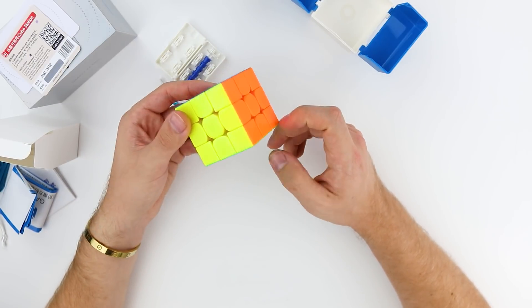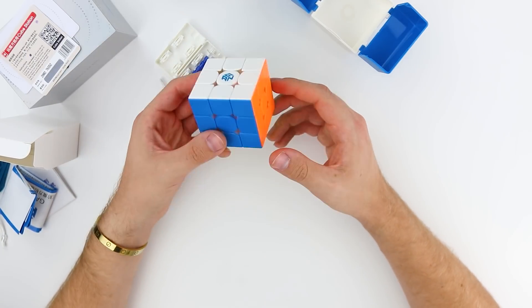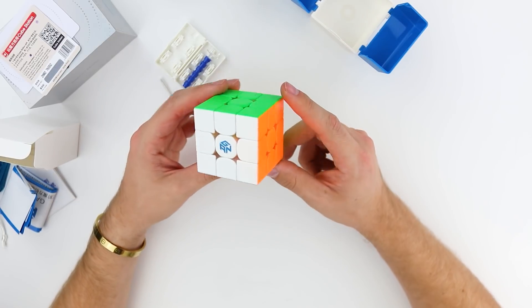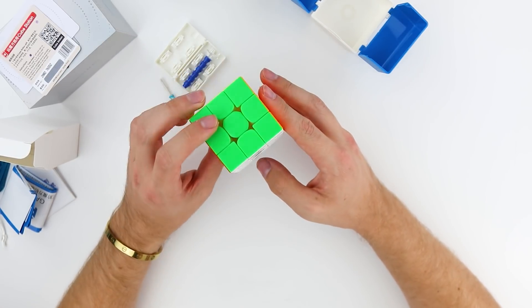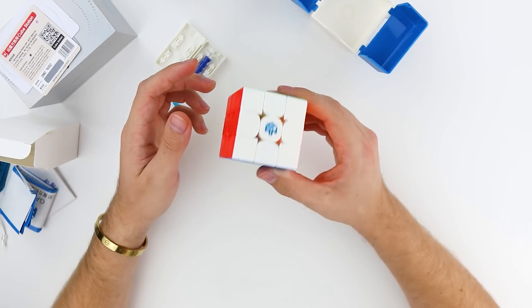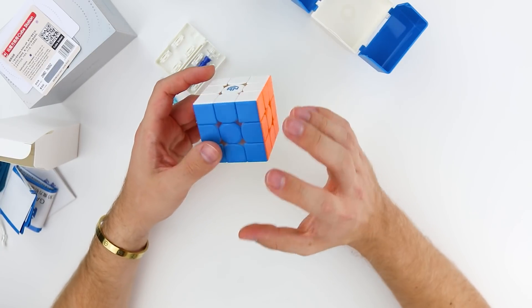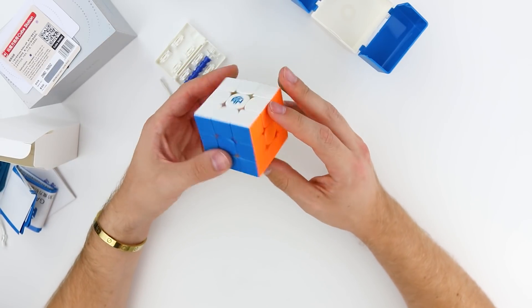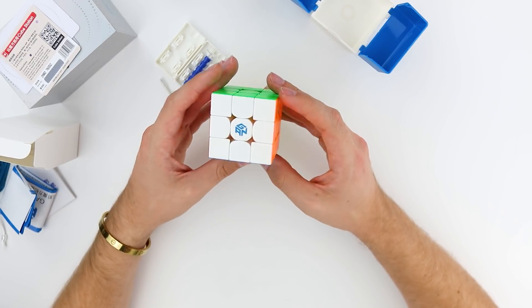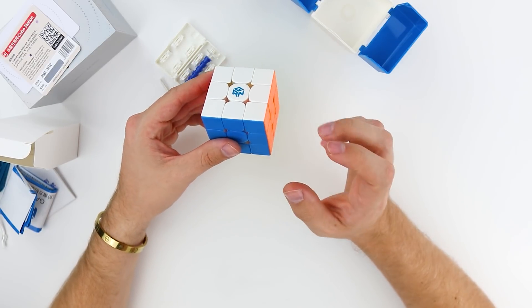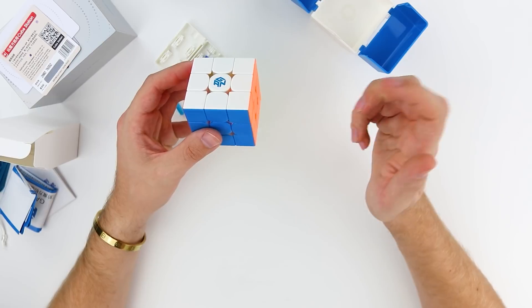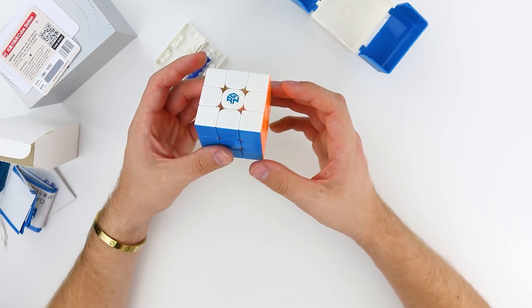But my first impressions of the cube itself is this thing is extremely light. It is a 63 gram cube in terms of weight. And you can definitely tell it just feels very airy, very lightweight. So I'm dying to see what this core corner magnet system feels like. Let's go ahead and do the first turns.